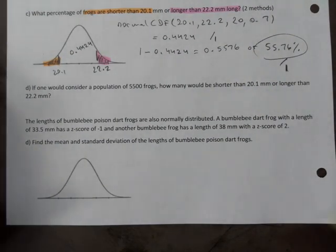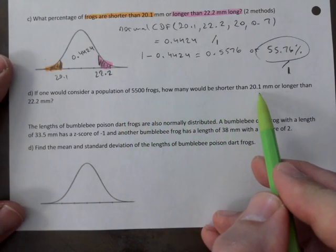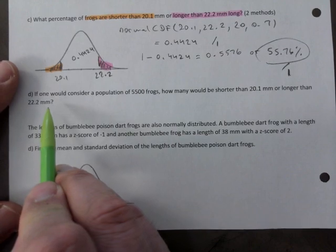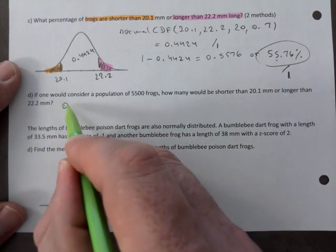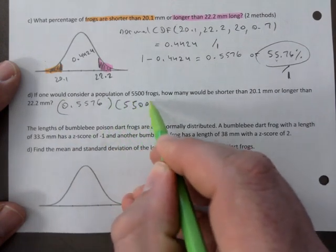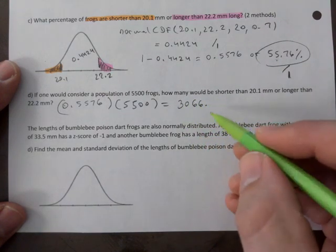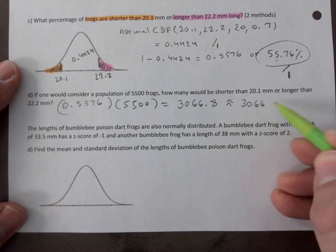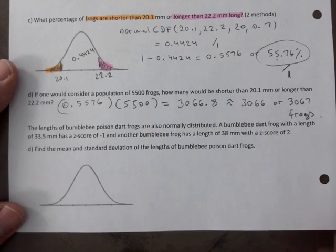D, if one would consider a population of 5,500 frogs, how many would be shorter than 20.1 millimeters or longer than 22.2 millimeters? So we're still talking about the same, so how many frogs. So we would use our answer here, whatever you got up in C, I just multiply that by 5,500. If you did that, you still get the marks here. That would be 3,066.8, and because we're talking number of frogs, that's rounded here. So one mark for that as well.